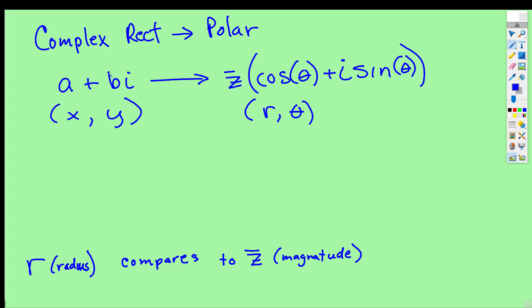You just have to understand the vocabulary. This form is complex rectangular, and this is complex polar, or sometimes called complex trig, depending on the professor or textbook. It's either called complex polar or complex trig.